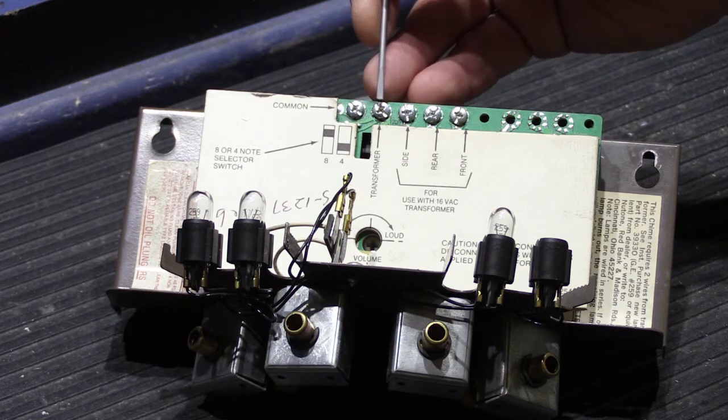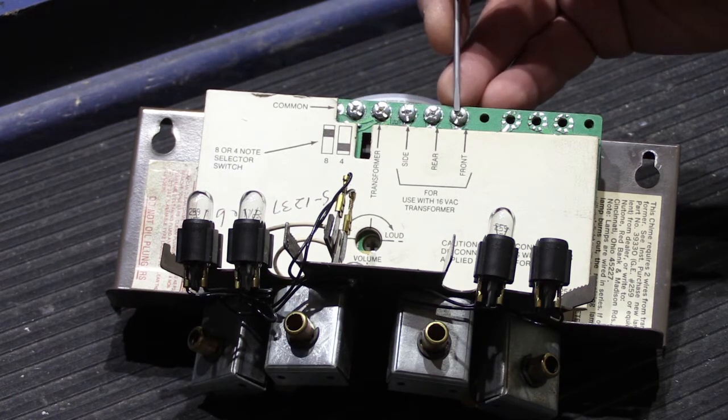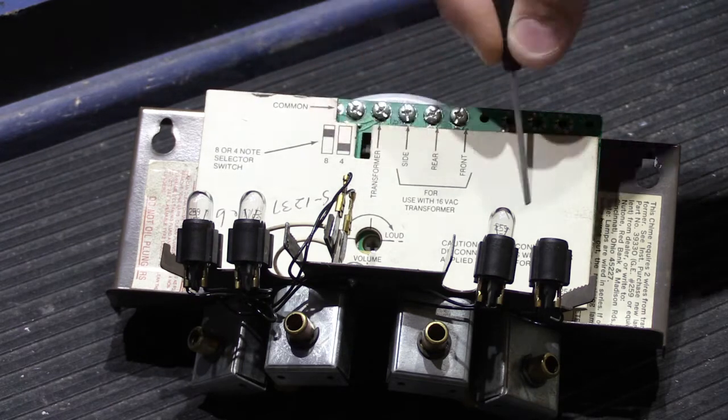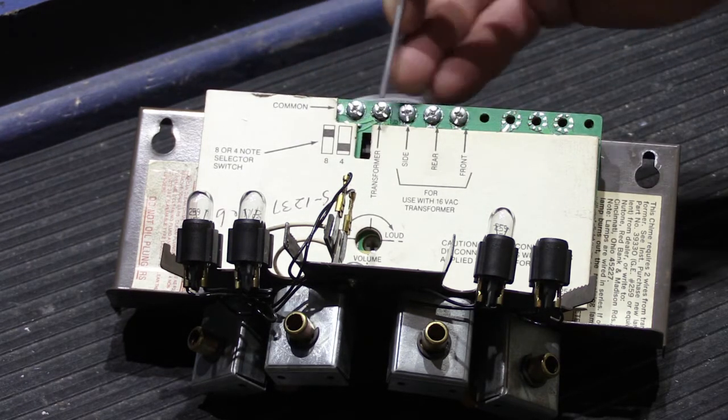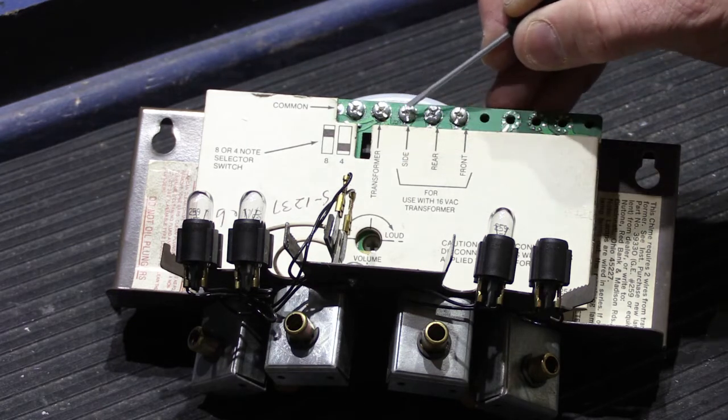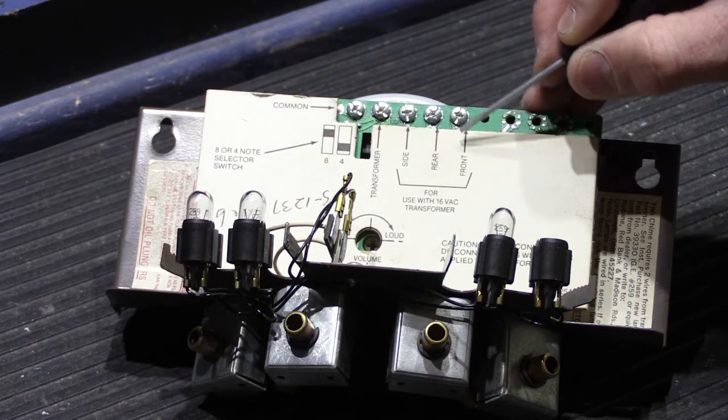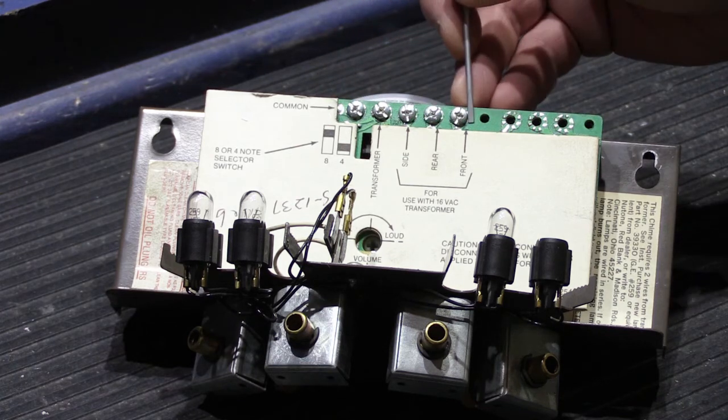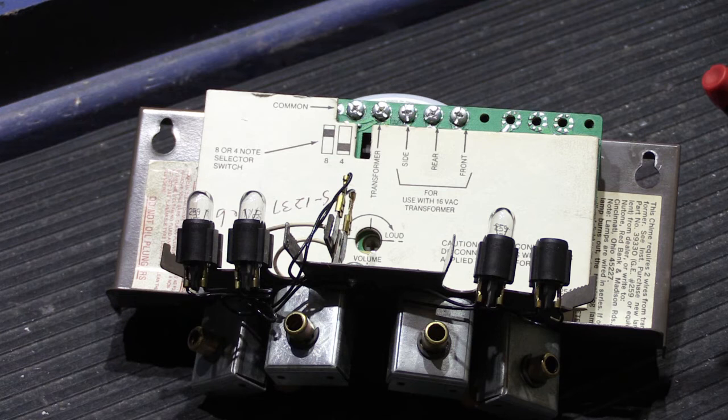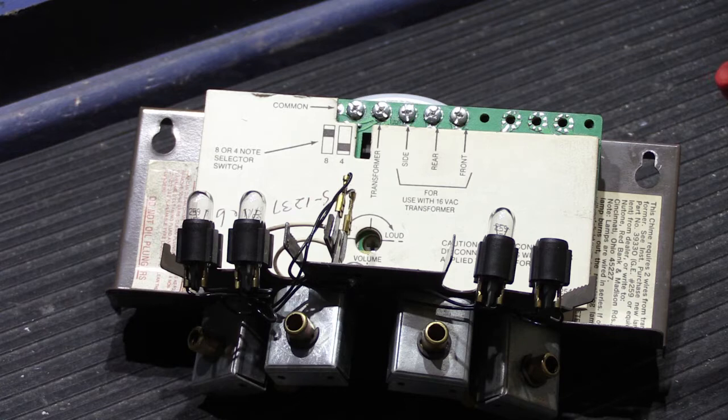You have our screw wire connections here across the top, and they're labeled on the cardboard insulator cover. This one is common, and then we have transformer, side, rear, and front. If you need to know how to hook this up, you can watch the video I made about how to wire a four-wire eight-note long tube chime base, because it takes you through it in great detail, and if you follow along with the video, you can hook it up yourself.